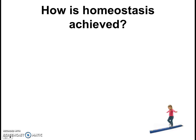Hello there and welcome back to our video series on the topic of homeostasis. In our last video, we looked at the definition of homeostasis, and we saw that homeostasis refers to the maintenance of a relatively constant internal environment. We looked at how homeostasis is important for the survival of our cells and hence for our own survival. Now the next question is, how is this homeostasis achieved? How does the body manage to maintain its internal environment?